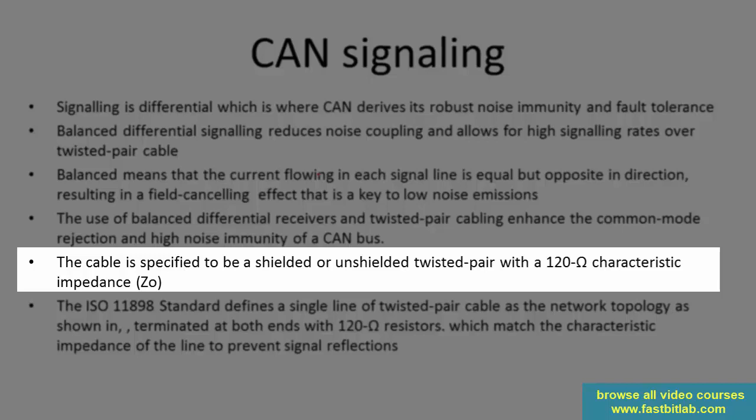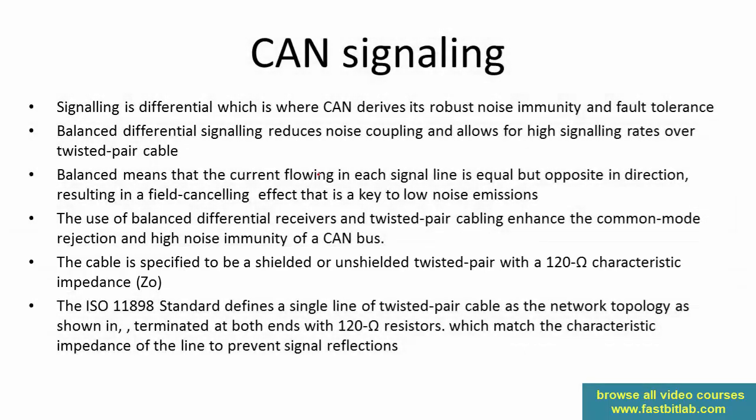Otherwise the network may not work properly — that is actually mandatory. In our example projects, I will show you that whatever transceiver module you get in the market, they actually come with 120 ohm characteristic impedance. You need not connect it separately because most of them come with a 120 ohm resistor, but you have to check the schematic of the transceiver module you buy. Make sure it has that 120 ohm; otherwise you have to connect it externally.